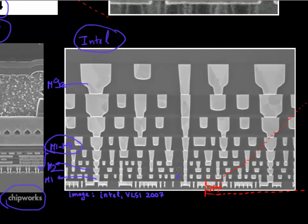If the pitch here is x, the pitch in the next level is maybe 1.4x, and the pitch of each interconnect level continuously increases. This is because they want to really optimize the performance and minimize the delay from the interconnect. So the Intel design is really optimized for performance to the very core.